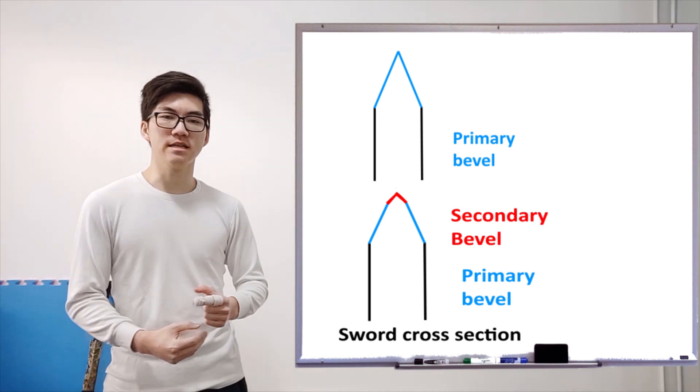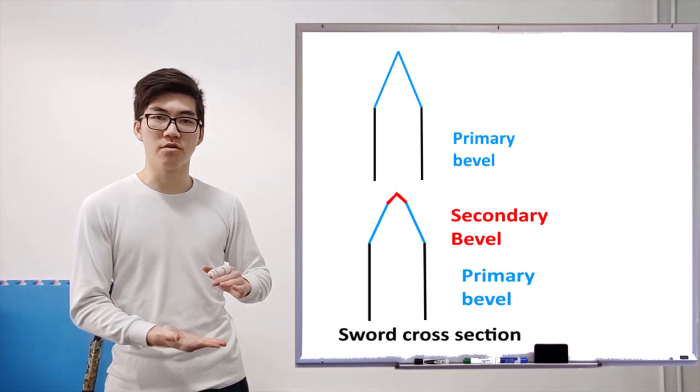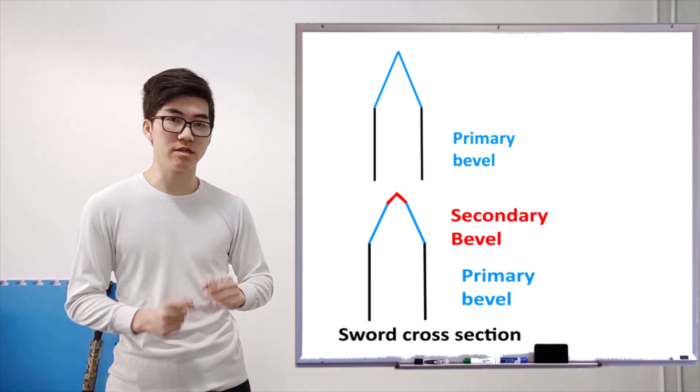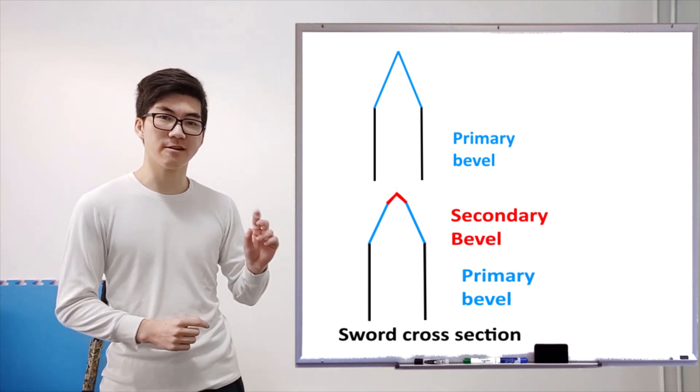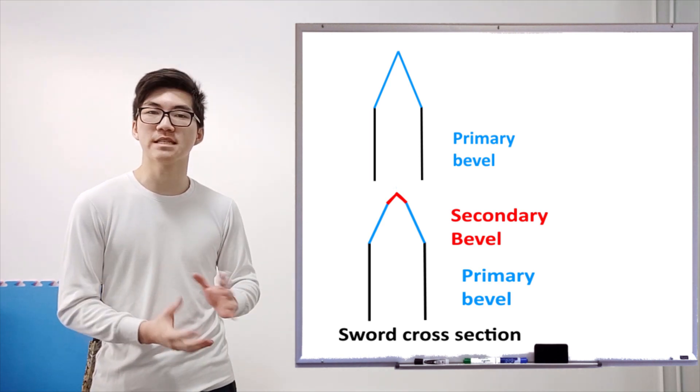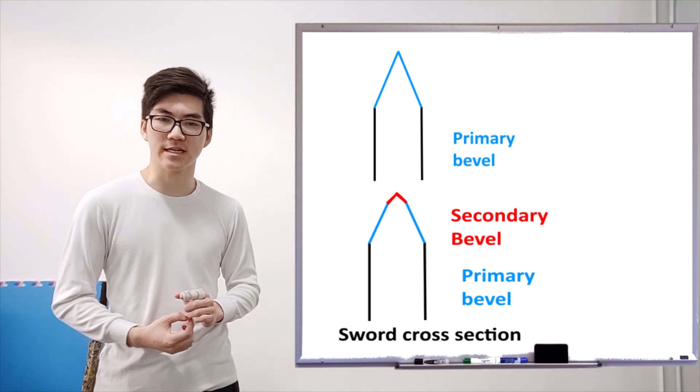Now a secondary bevel is a lot easier. You get your primary bevel, you slightly increase the angle, not by much, just by a little bit, and then you sharpen that, and you take off much less material. And you can stay at lower grits because the finish of the secondary bevel doesn't matter. People don't really notice it or see it.